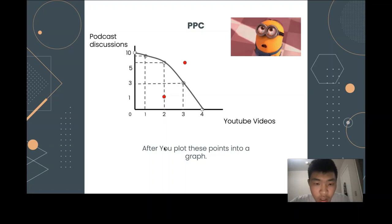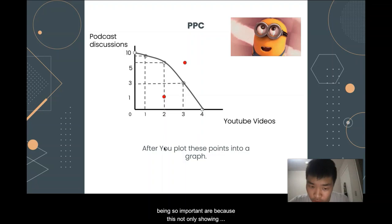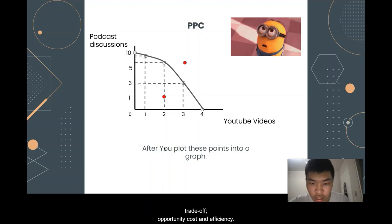This is the Production Possibility Curve, or sometimes called PPF, Production Possibility Frontier. The reasons this graph is so important are because it does not only show the production of products, you can also see scarcity, trade-off, opportunity cost, and efficiency. It shows scarcity because the graph tells us not to produce anywhere beyond the curve, which is because of limited resources.